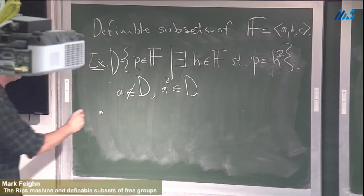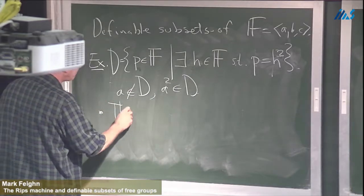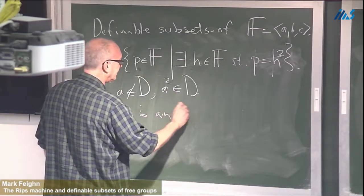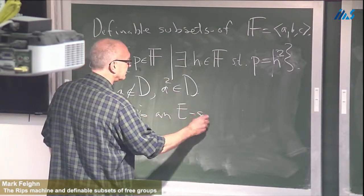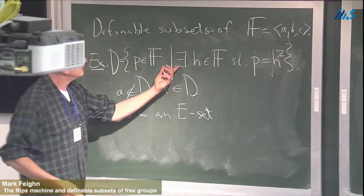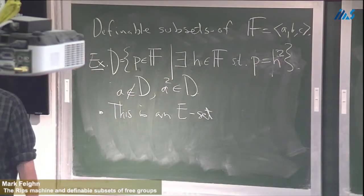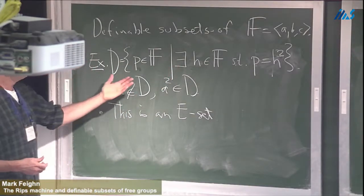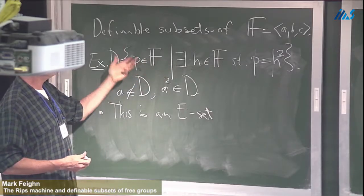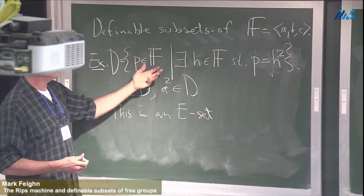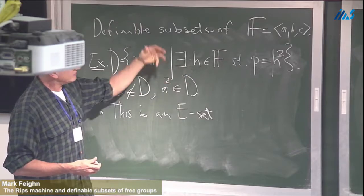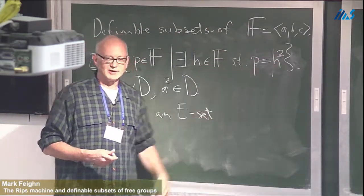A definable set: you get to use quantifiers and symbols representing elements of the free group. This is the main example, and you can guess what the general definition is. This is an example of an E-set — it's defined using only one quantifier, E — and of course you can imagine sets defined with more quantifiers: for all H there exists a G, and so on.